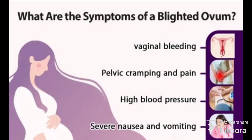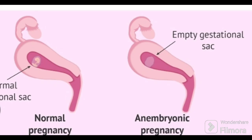Now we will look at the symptoms. The patient presents with heavy vaginal bleeding, pelvic cramping pains, elevated pressure on the uterus, and severe nausea and vomiting. This picture clearly shows that in a normal pregnancy there is a normal gestational sac, but in anembryonic pregnancy or blighted ovum there is a totally empty gestational sac.